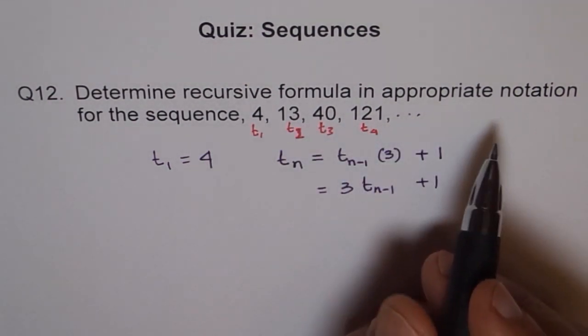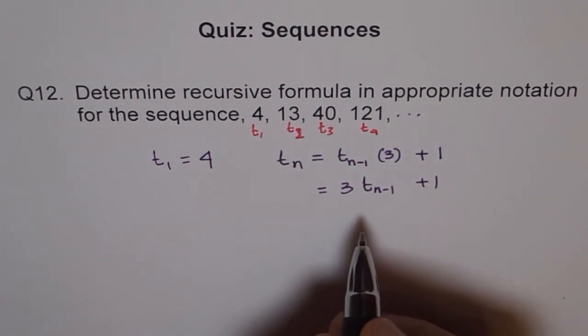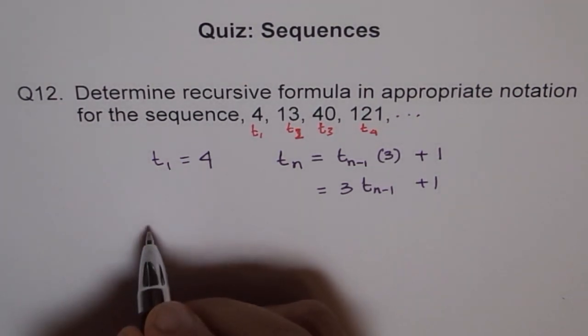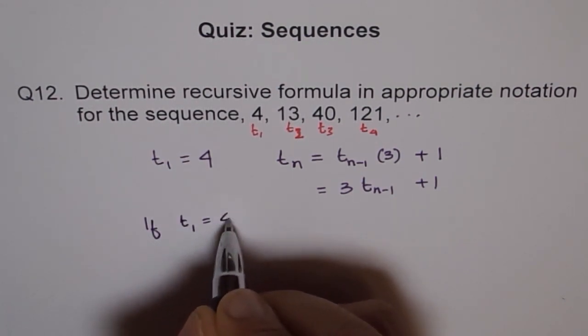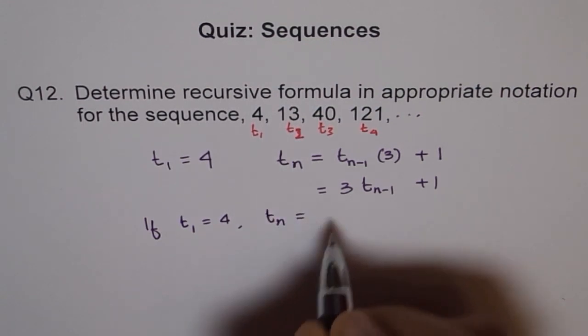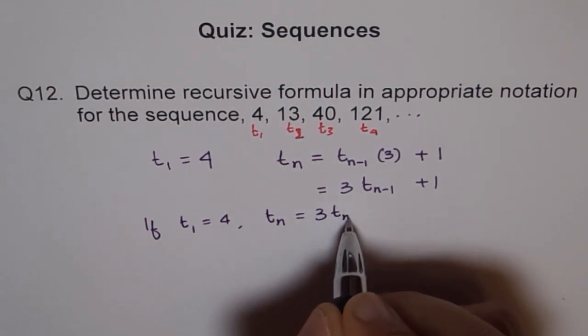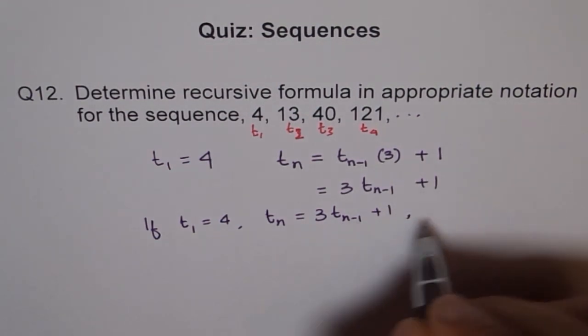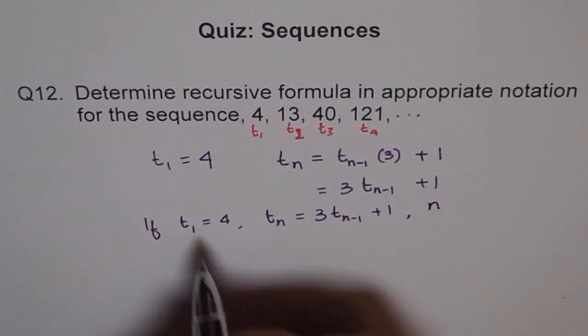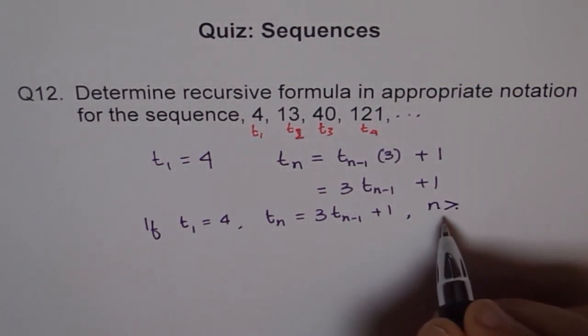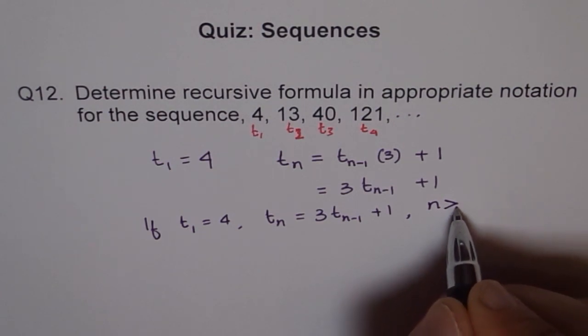Now it says appropriate notation. What basically it means is that we should write it properly, saying that, given, you say, if T1 equals to 4, then TN equals to 3 times TN minus 1 plus 1, where what is the value of N? N, because 1 is given to us, is greater than 1, you can write, or you can say greater than or equal to 2.